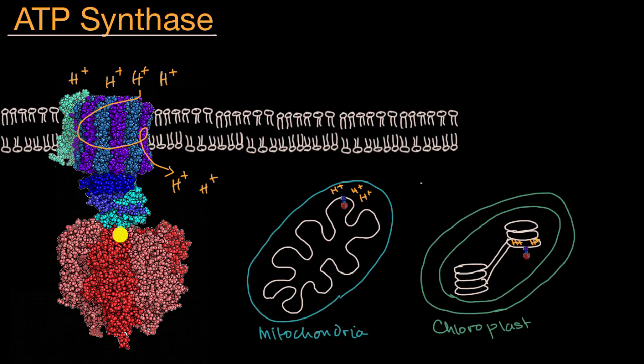And then this axle nudges these parts of the protein so that they jam together an ADP with a phosphate group to produce ATP.